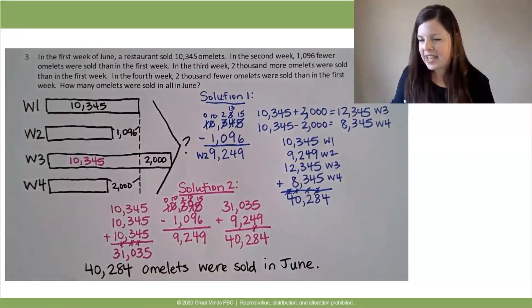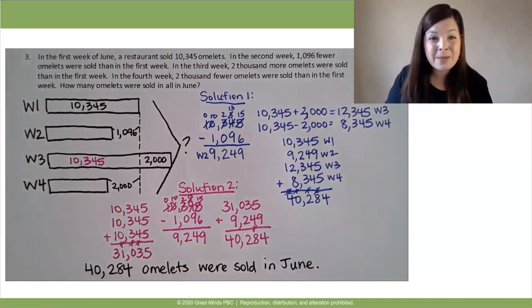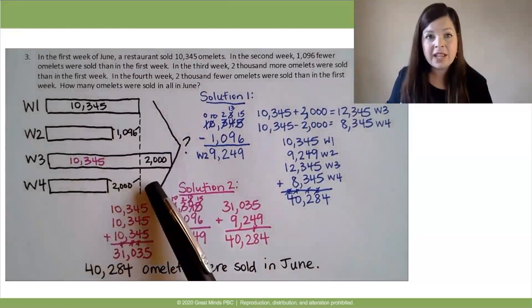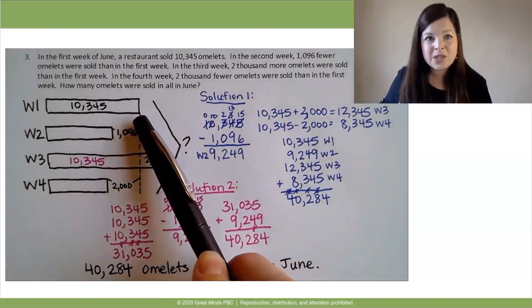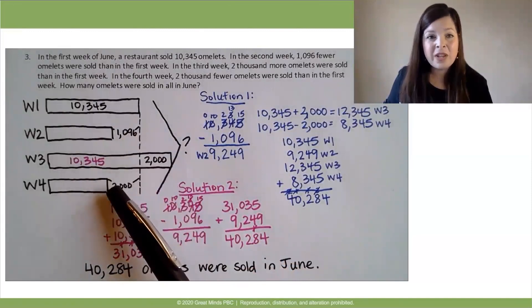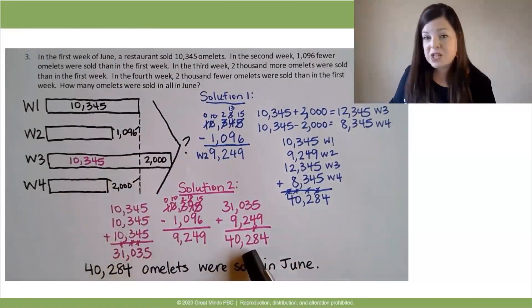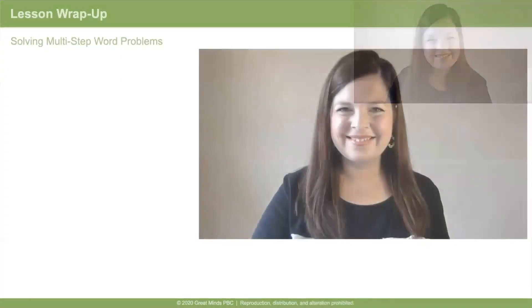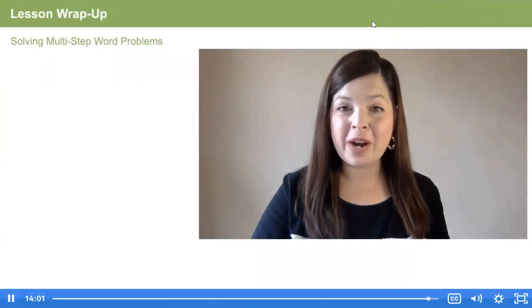Now, how do we know that our answer of 40,284 omelets makes sense? You could think about this in a couple of different ways. One way would be to round each week: in week one, about 10,000 omelets were sold; week two, about 9,000; week three, about 12,000; and week four, about 8,000. Together, that makes 39,000 omelets, which is really close to what we found. Great job today, friends. Today we solved multi-step word problems, and we thought about the reasonableness of our answers.